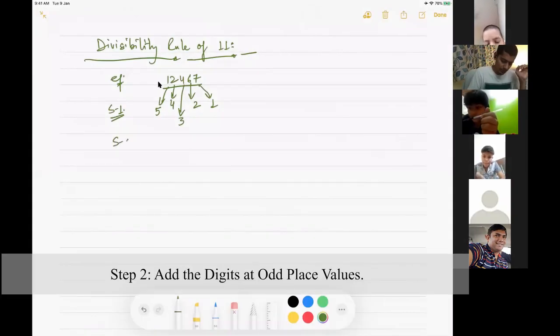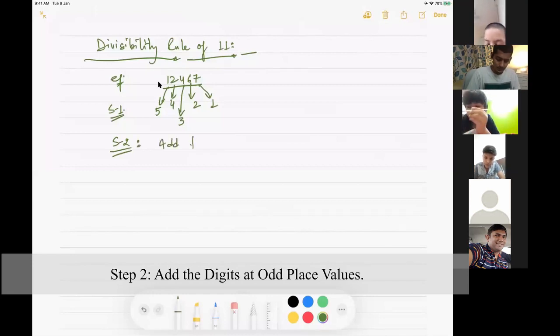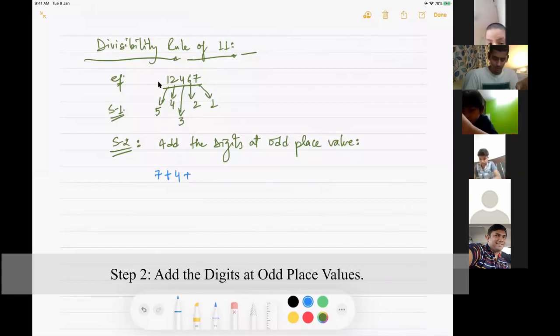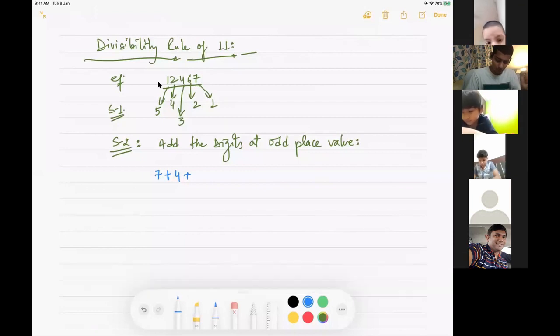Step 2. Add the digits at odd place values. If you remember, odd numbers are numbers which are not divisible by 2. So what are the odd places here? 1, 3, and 5. At odd place 1 the digit is 7.